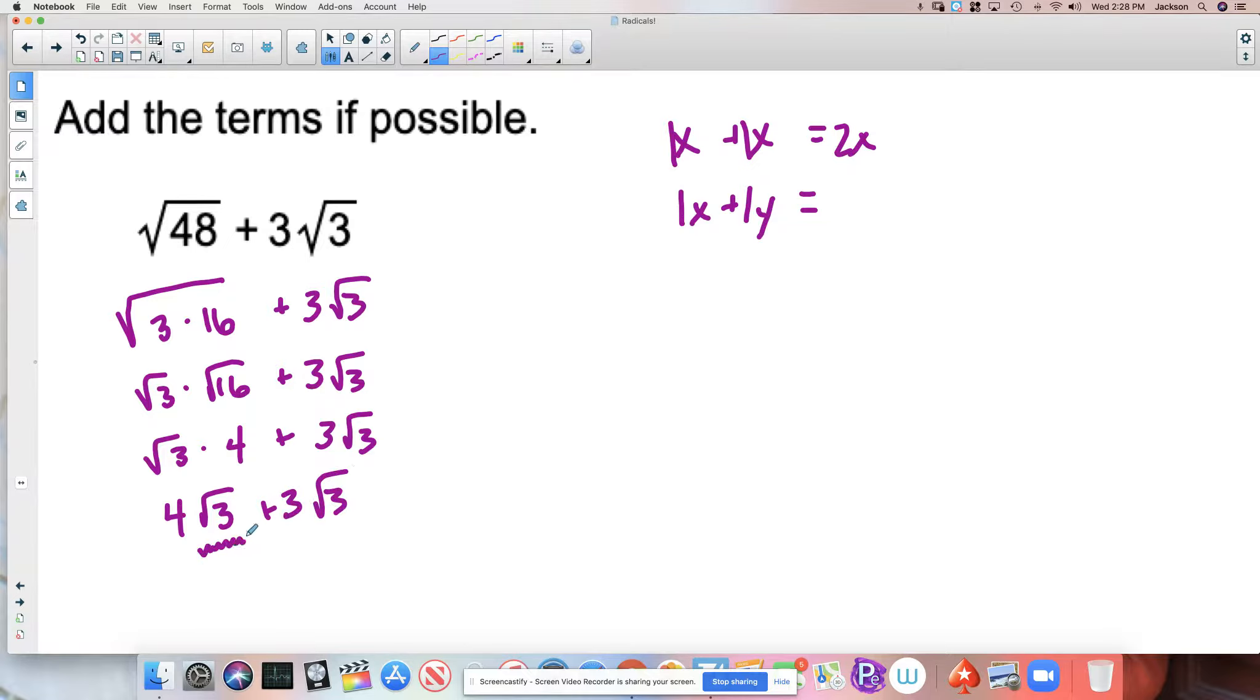Now when we look at it like this, the two radicals that are involved in this problem are exactly the same. So imagine if this said 4x plus 3x, I would say that's 7x. So I would say this is 7 radical 3. I do not add the 3s that are under the radical. I do not call that the square root of 6.